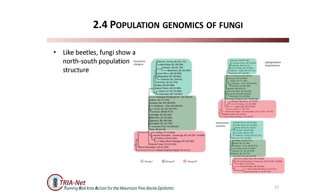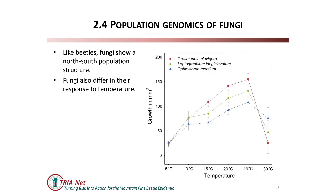I'll talk a little about the fungi - this is work from Richard Hamlin's lab. Like the beetles, fungi show north-south population structure. The fungi have a simpler genome, so Richard was actually able to sequence the entire genome of some of these organisms. These three figures show phylogenetic trees of three species of fungi, all showing a similar kind of structure: a basal clade found south of the border, and two clades - the green and blue - found north of the border. We see this similar pattern in all three species, which maybe isn't surprising because they're hitchhiking on the beetles.